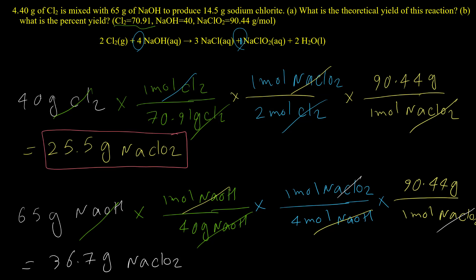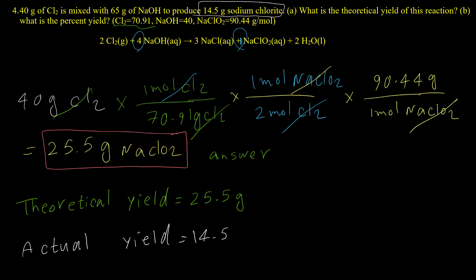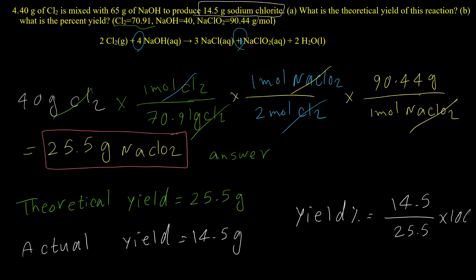The value from the first calculation (25.5 grams) is lower than the second (36.7 grams), so 25.5 grams is the theoretical yield and Cl₂ is the limiting reactant. The question also gave us the actual yield: 14.5 grams of sodium chloride was produced. Therefore, the percent yield equals 14.5 over 25.5 times 100, which equals 56.9%.